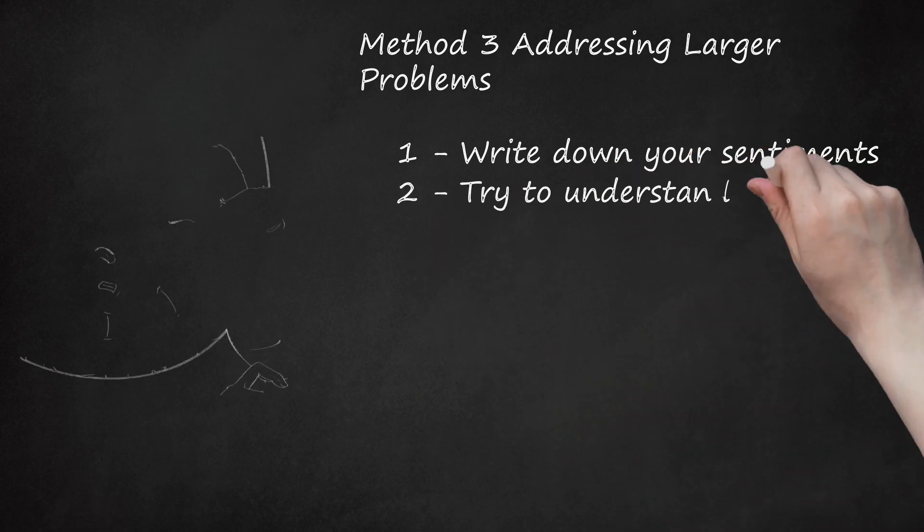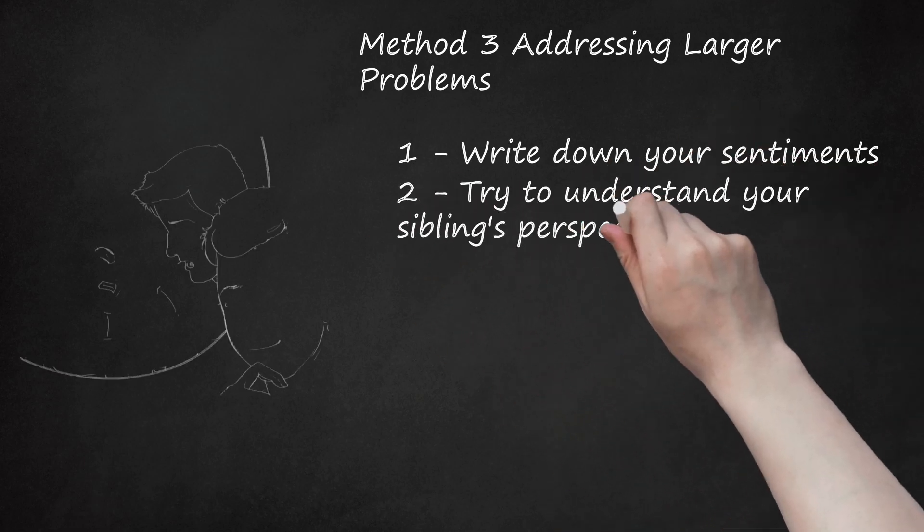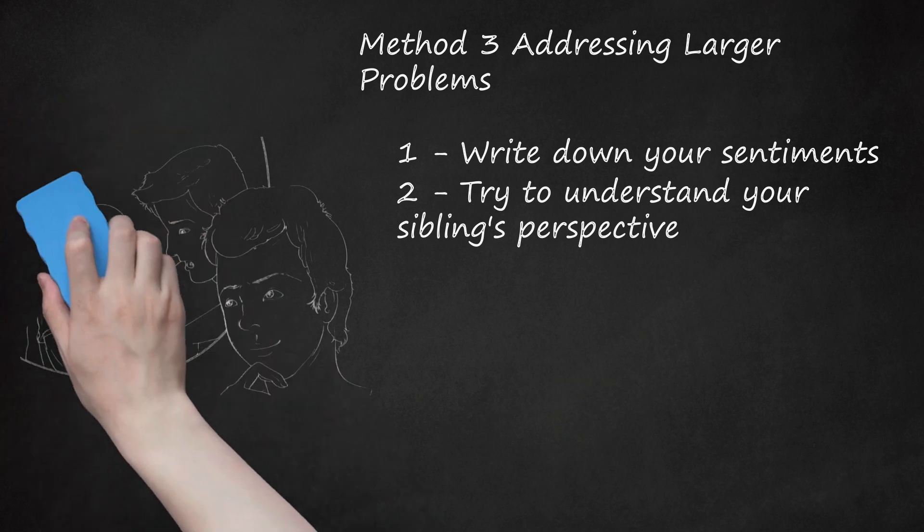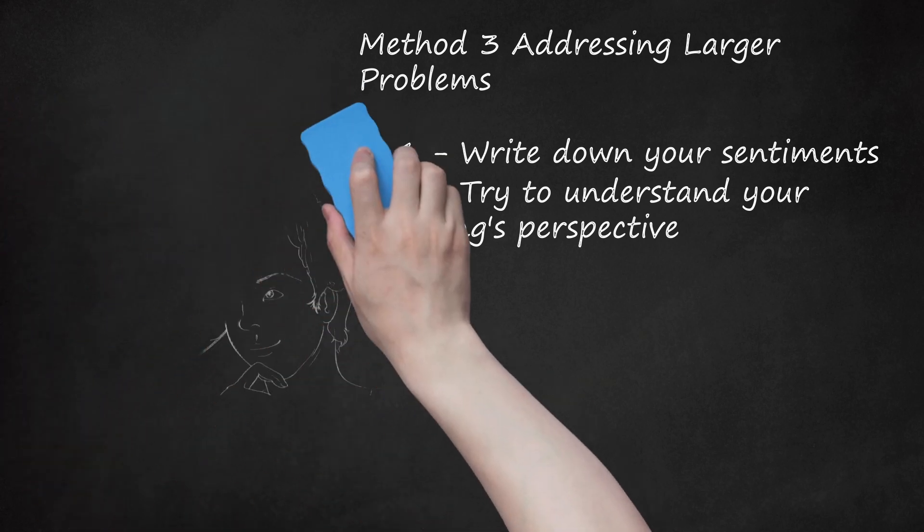2. Try to Understand Your Sibling's Perspective. In addition to writing down your perspective, make an effort to consider your sibling's point of view prior to your talk. Why might your sibling feel aggressive towards you? What events have shaped her experience? Have you been unfair in the situation at all? In conflict, it is very rarely only one person's shortcomings creating a problem. Try to understand why you may sometimes rub your sibling the wrong way and what you can do to change the situation.